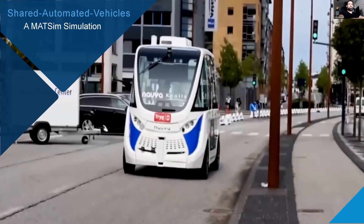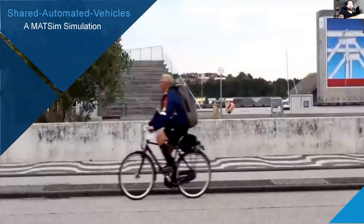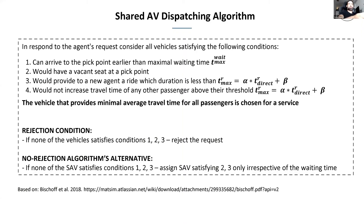Now we will talk about shared automated vehicles. How does the algorithm work? You go out from your home, take your phone, and order a shared automated vehicle. The algorithm checks that the vehicle can arrive before the maximum waiting time, that you have a seat for the entire ride, and that the ride duration is less than TR_max — meaning the travel time is no more than 1.5 times your direct travel time.